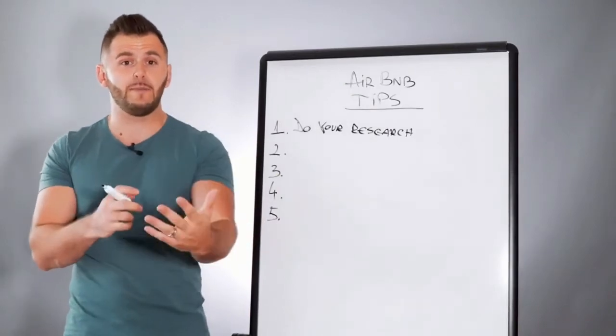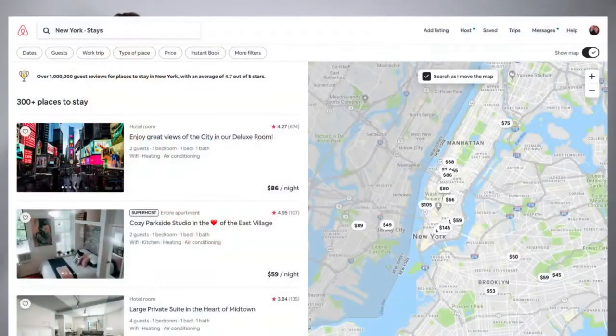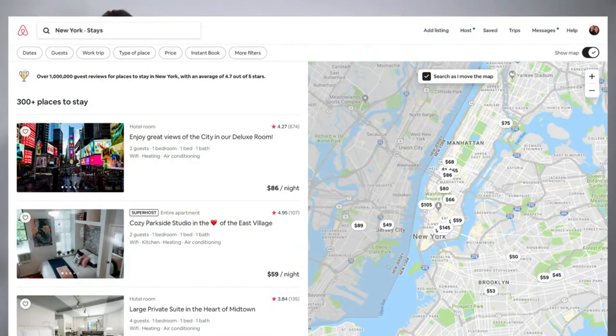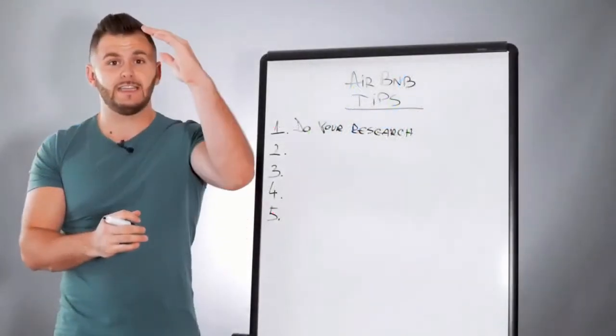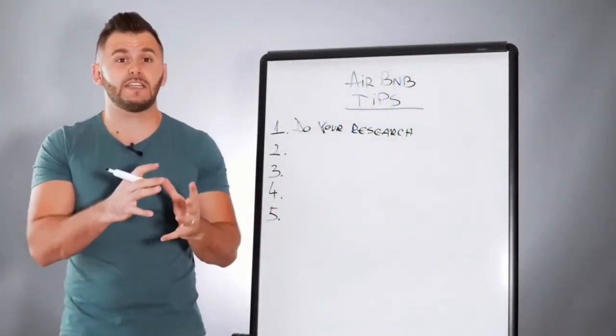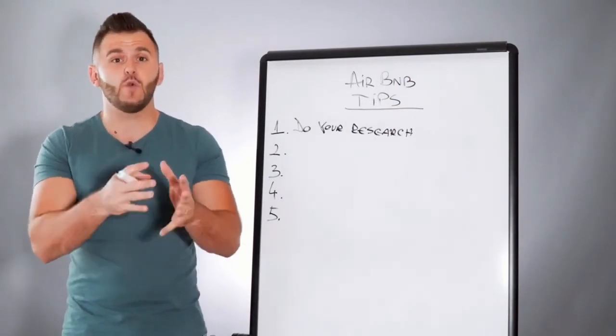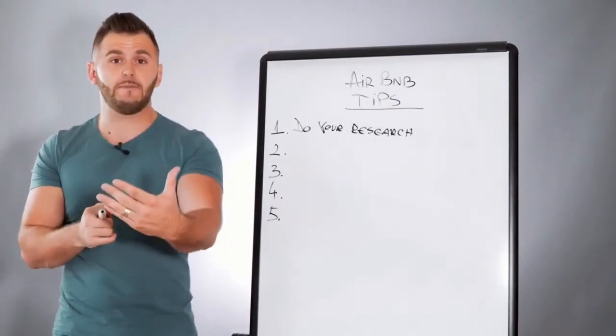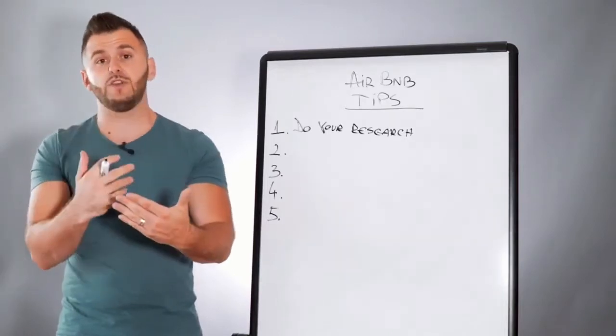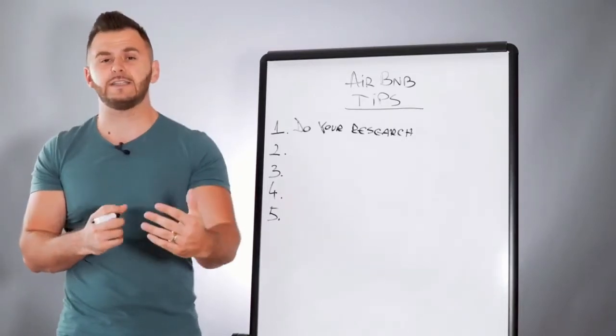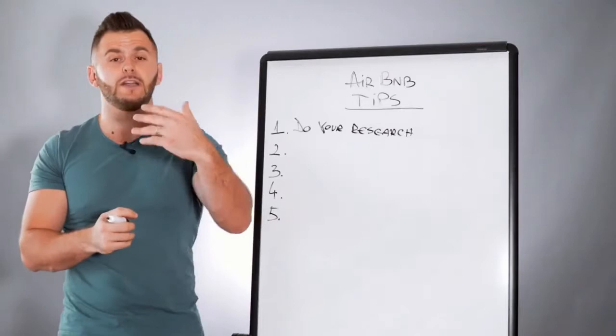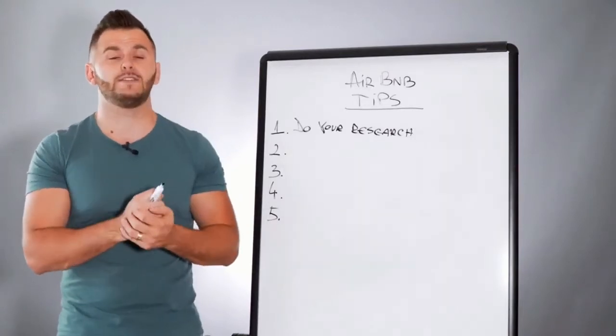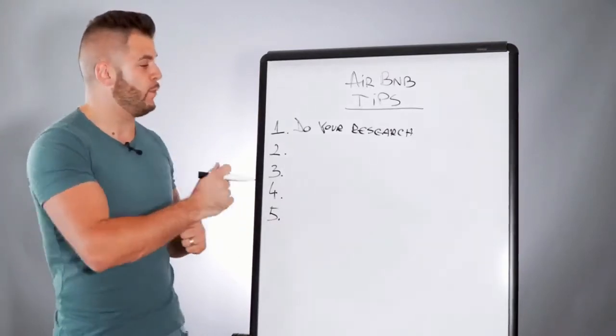Go on Airbnb and start scrolling and see what are the first 10 to 20 listings that show up from a consumer standpoint. So be a consumer first. Before you are a host, you want to be a consumer. Sign up for an Airbnb account and start doing your research in a couple of cities in your local area, or at least in the area that you want to put up a property for Airbnb.